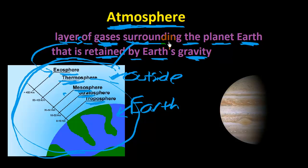Now, it can also mean for other planets. So this is Jupiter, the planet Jupiter. We have Mars, Saturn, Pluto—they all have an atmosphere.